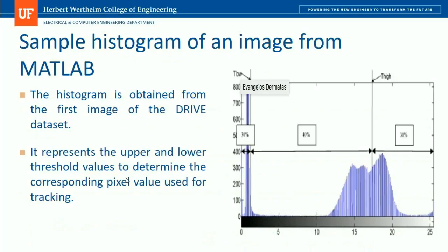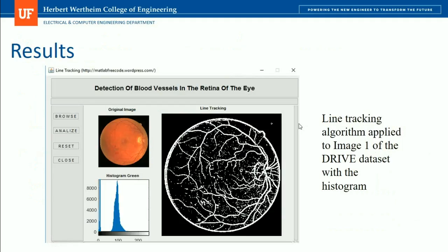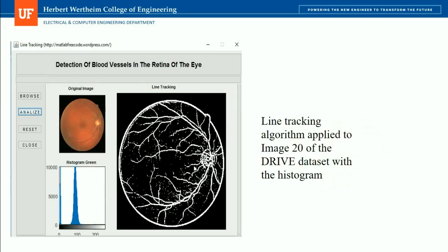This is a sample histogram of an image from the DRIVE dataset obtained in MATLAB. A particular threshold is set to determine the low and high values used for pixel tracking. A GUI was developed to demonstrate the line-tracking algorithm. Taking an image from the DRIVE dataset, the original image and its histogram allow determining lower and higher threshold values. After the MATLAB code runs, a segmented line-tracking image is produced, showing extracted blood vessels. Some fine grain noise is visible, which is a disadvantage of the line-tracking algorithm. A second example with another DRIVE dataset image yields a similar segmented result.